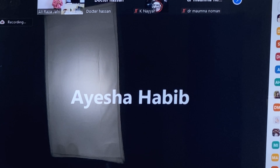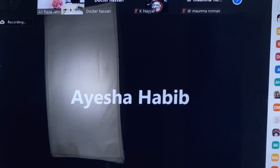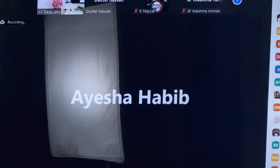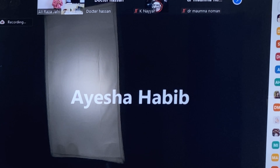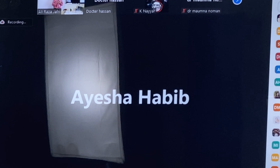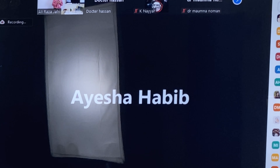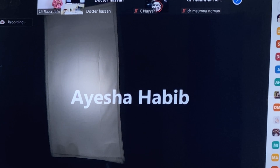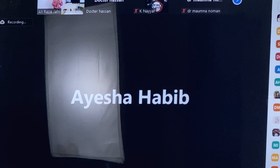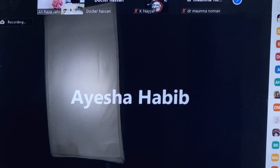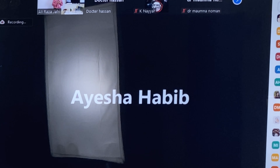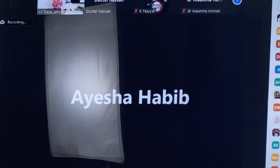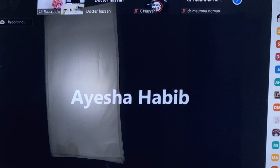The ideal cases for driftodontics after extraction of the first permanent molar are where the eighths are present. We confirm the presence of the eighth by seeing the crown part, which starts appearing from age seven to eight years. We also check the root developmental status of the seventh — it should be at the bifurcation area.